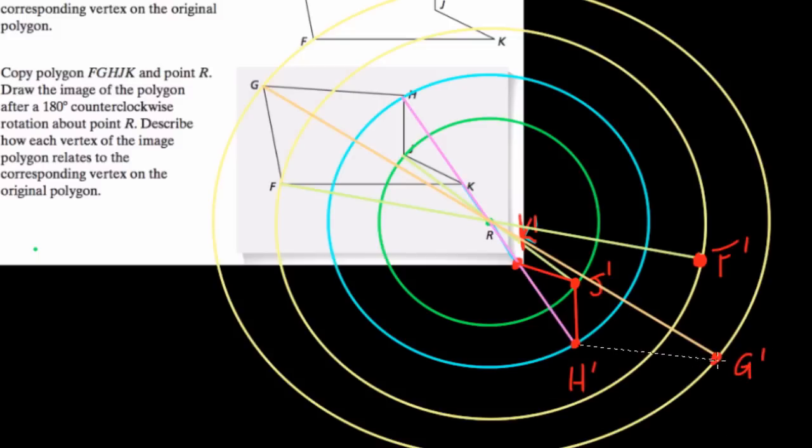So we connect these. And here, we get a repeat of our shape. A little bit harder to see because of all the colors I'm using. Sorry about that. But here, we can see the shape, in many ways, just been flipped about this new center, R.